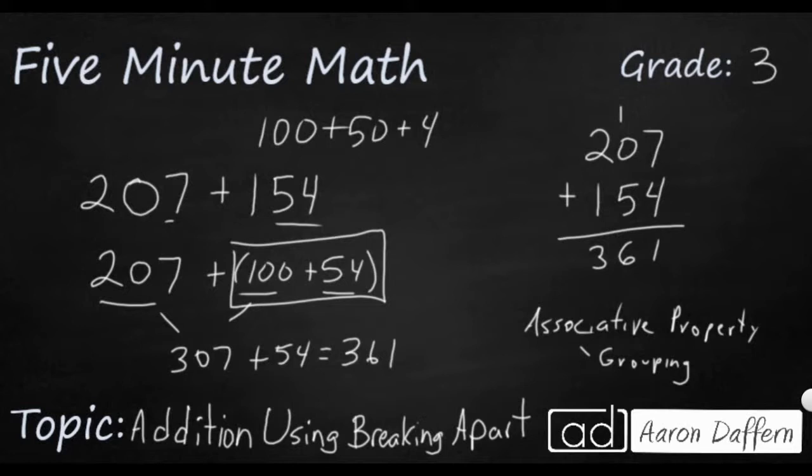So remember there's a few different ways that you can break apart the second addend. In this example, we just kept it into two chunks, the 100 plus 54. But if we did it like we did in the first example, we would have broken it up into three chunks: 100 plus 50 plus 4.